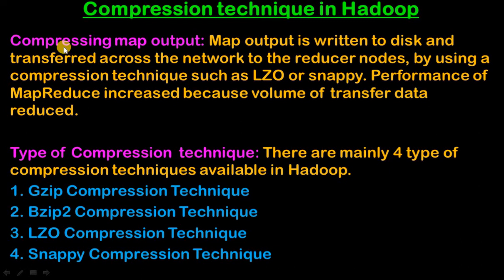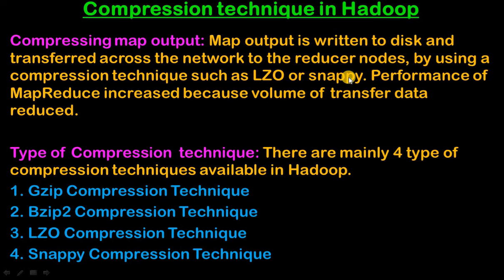Next is compressing the map output file. Map output is written to disk and transferred across the network to the reducer node. By using a compression technique such as LZO or Snappy, the performance of MapReduce is increased because the volume of transferred data is reduced.